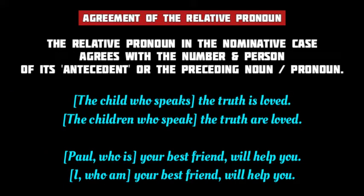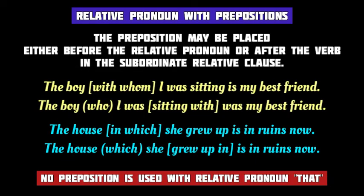If a relative pronoun is in the nominative case — that is, the subject of the relative clause — it agrees with the number and person of its antecedent. For example, if the antecedent is the singular 'child,' we use the singular verb 'speaks' after 'who.' If the antecedent is the plural 'children,' we use the plural verb 'speak.' If the antecedent is the singular 'pole,' 'who' is followed by 'is,' but after the pronoun antecedent 'I,' 'who' is followed by 'am.' The verb agrees with the antecedent in number and person.